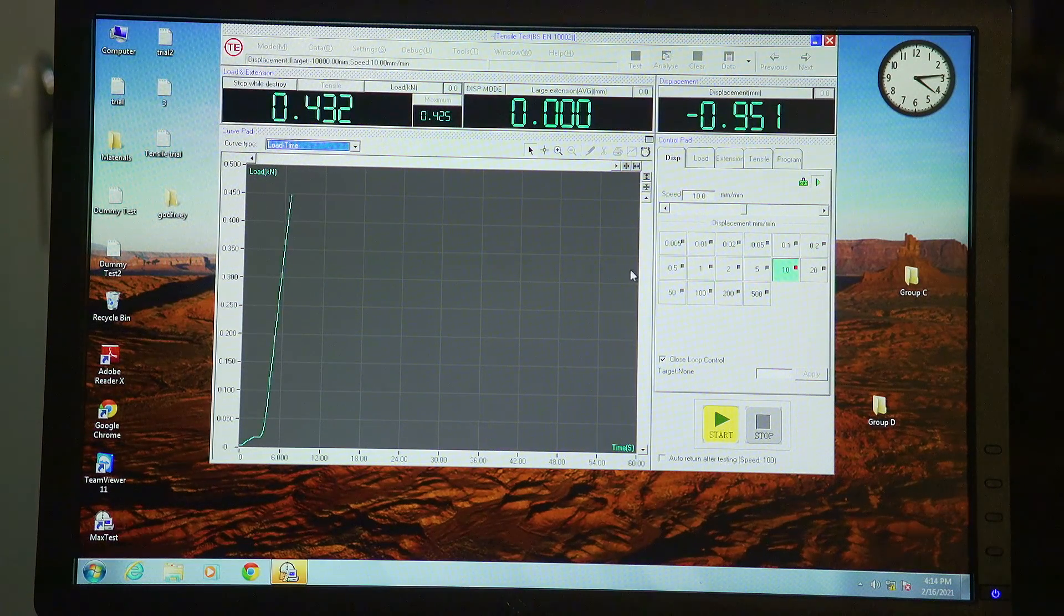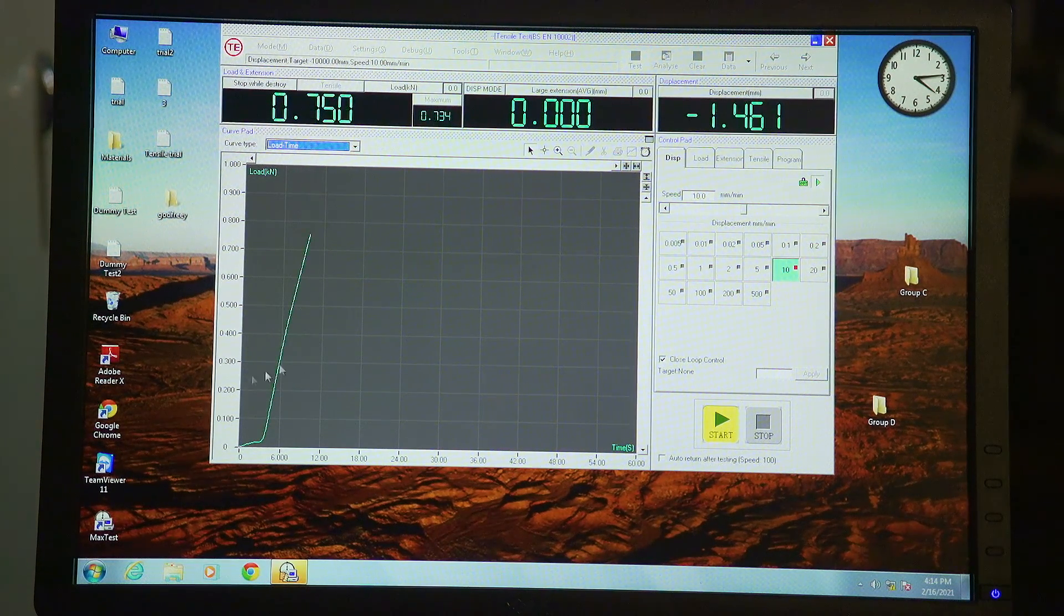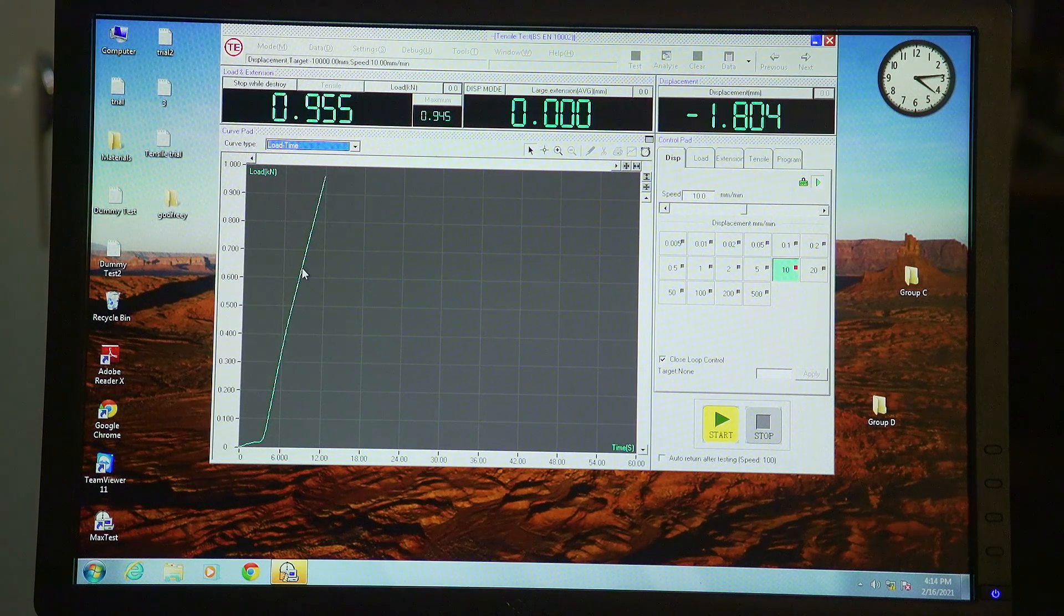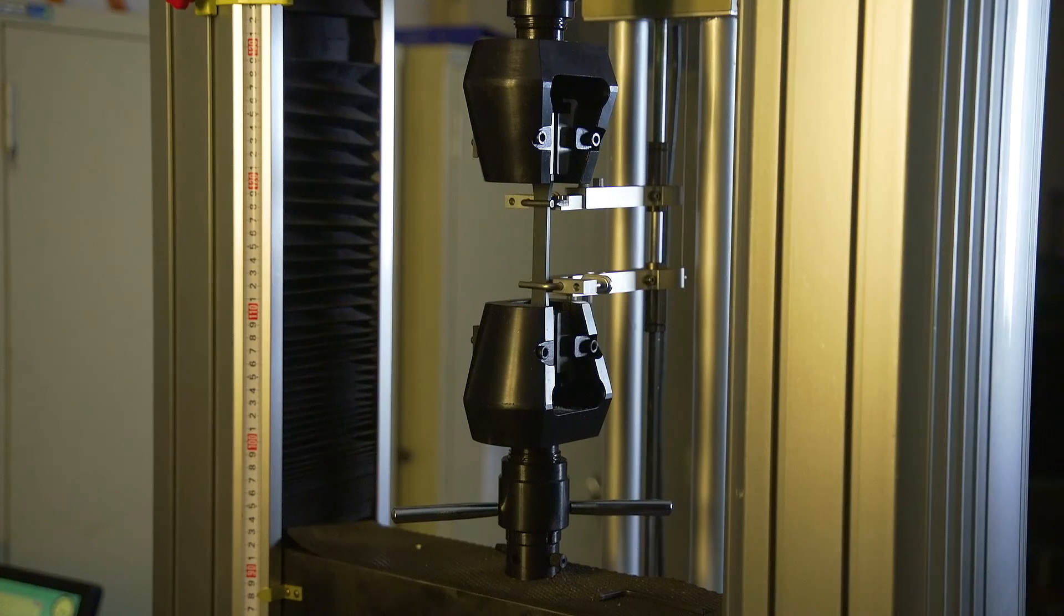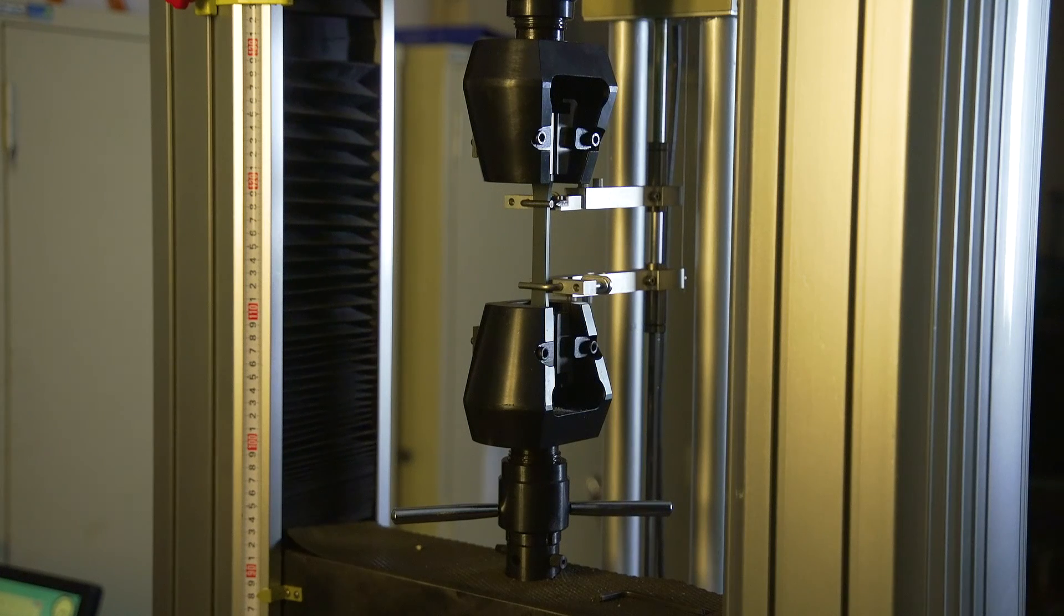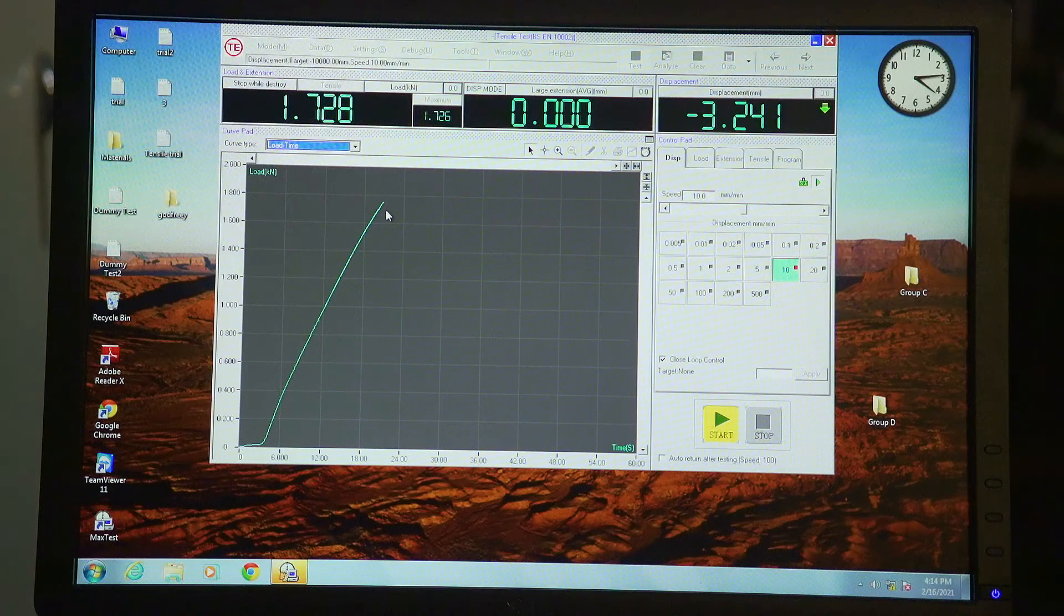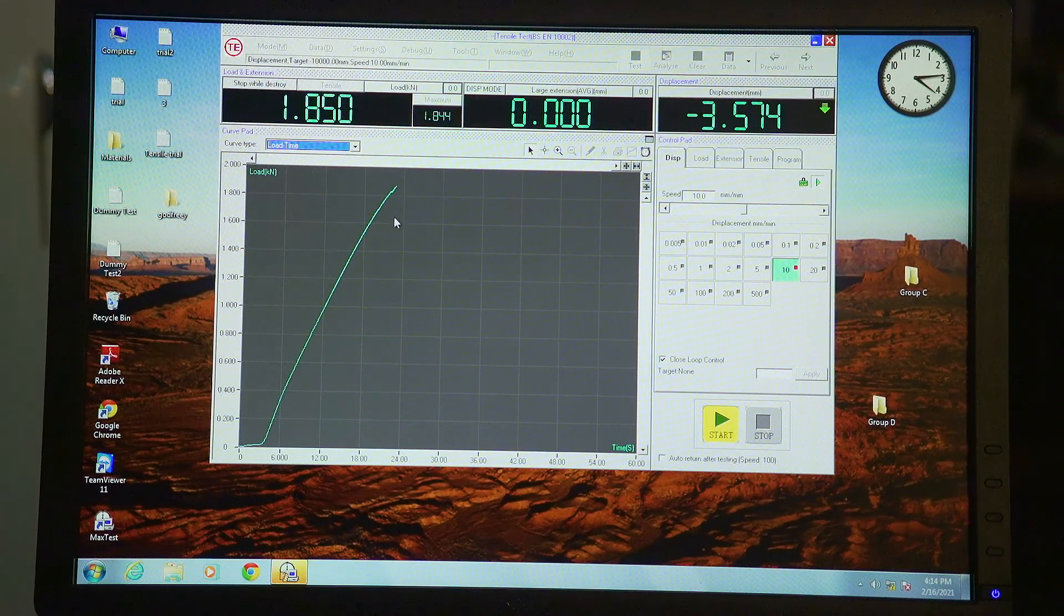As can be seen, the initial portion of the curve is elastic, and then we're going to get to a point where the material starts to plastically deform or shows non-linear deformation. At this point, I need to go and remove the clip-on extensometer.